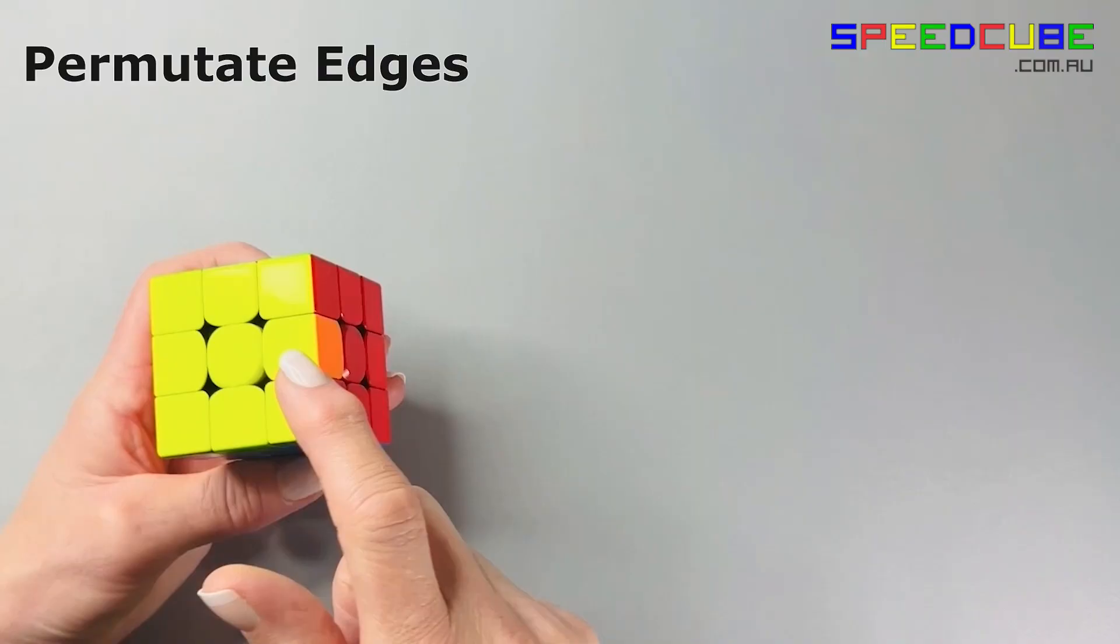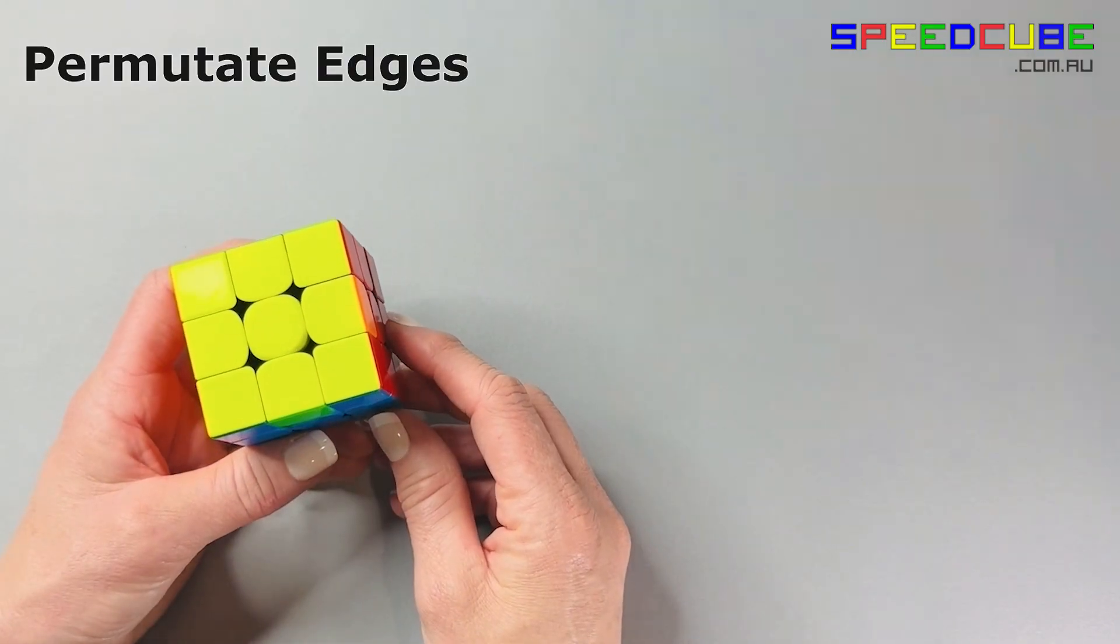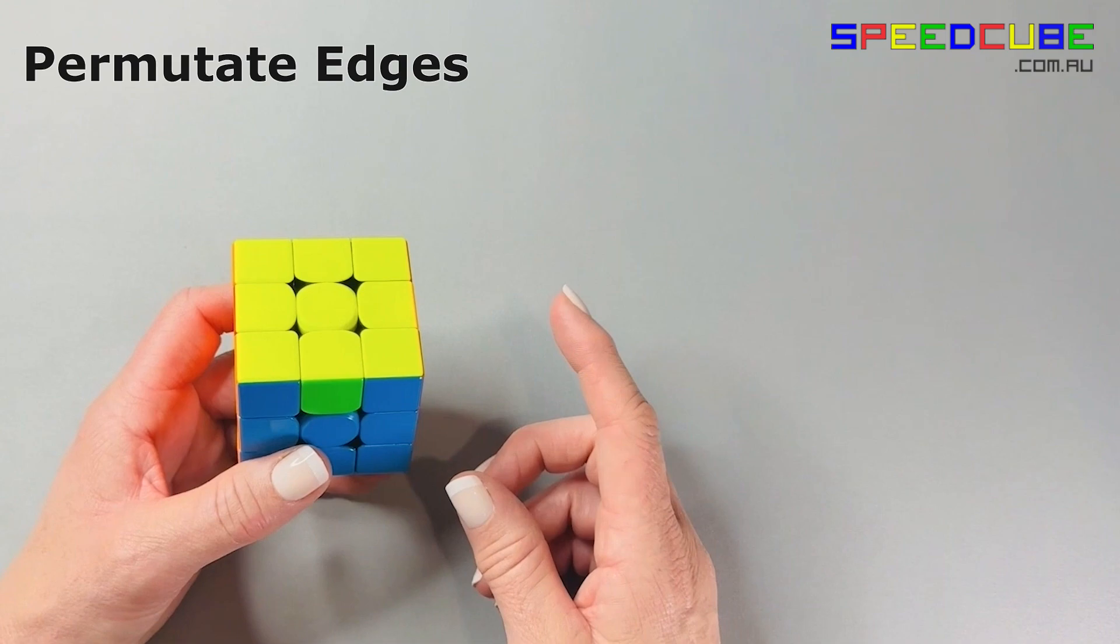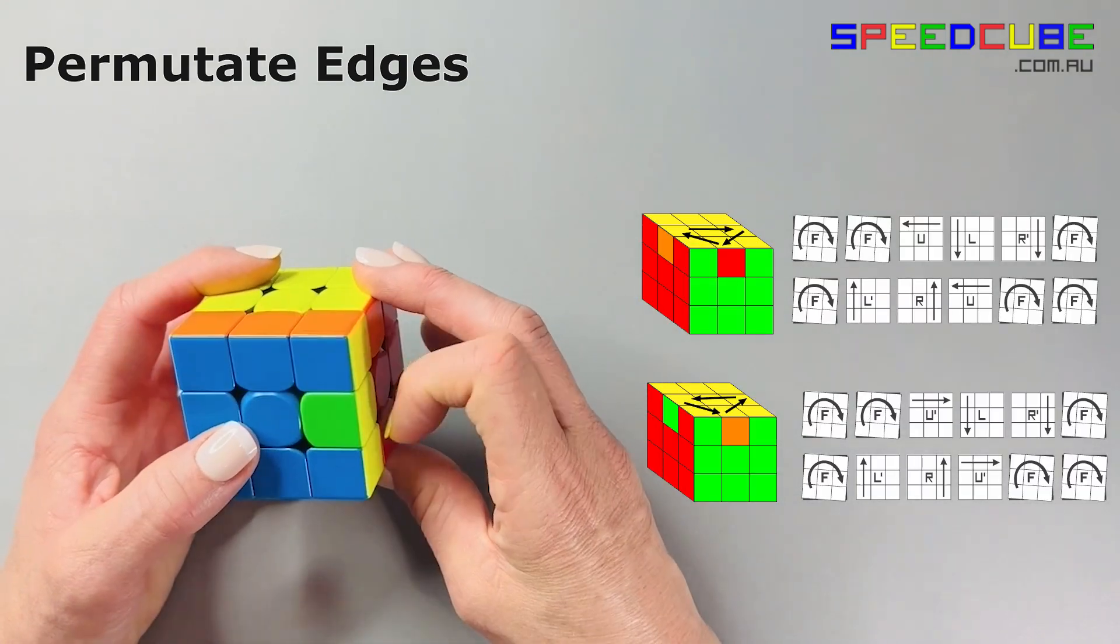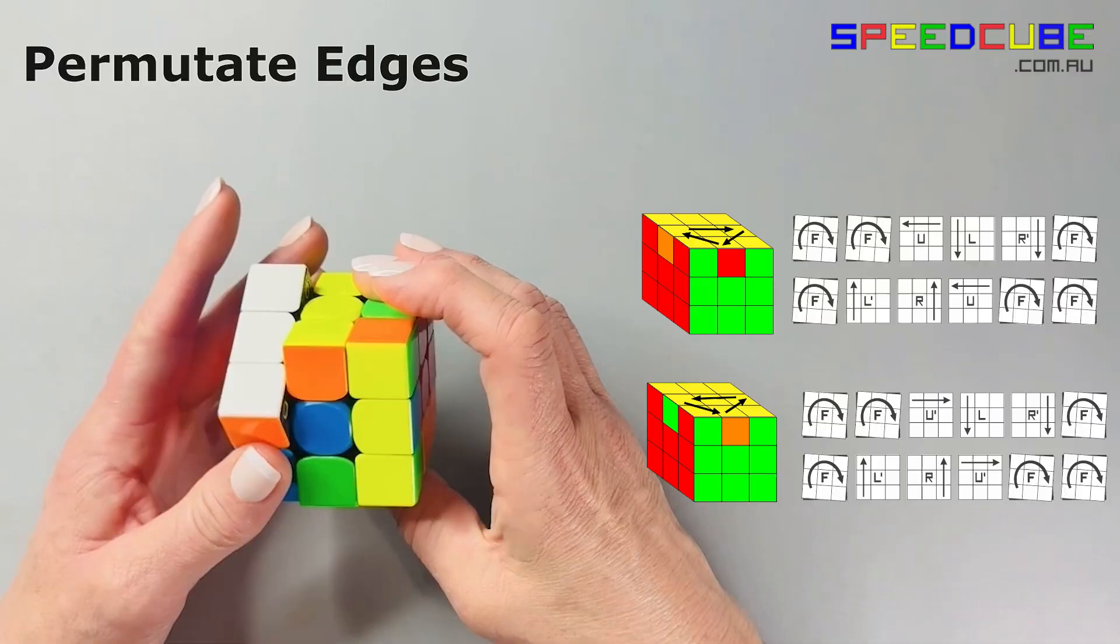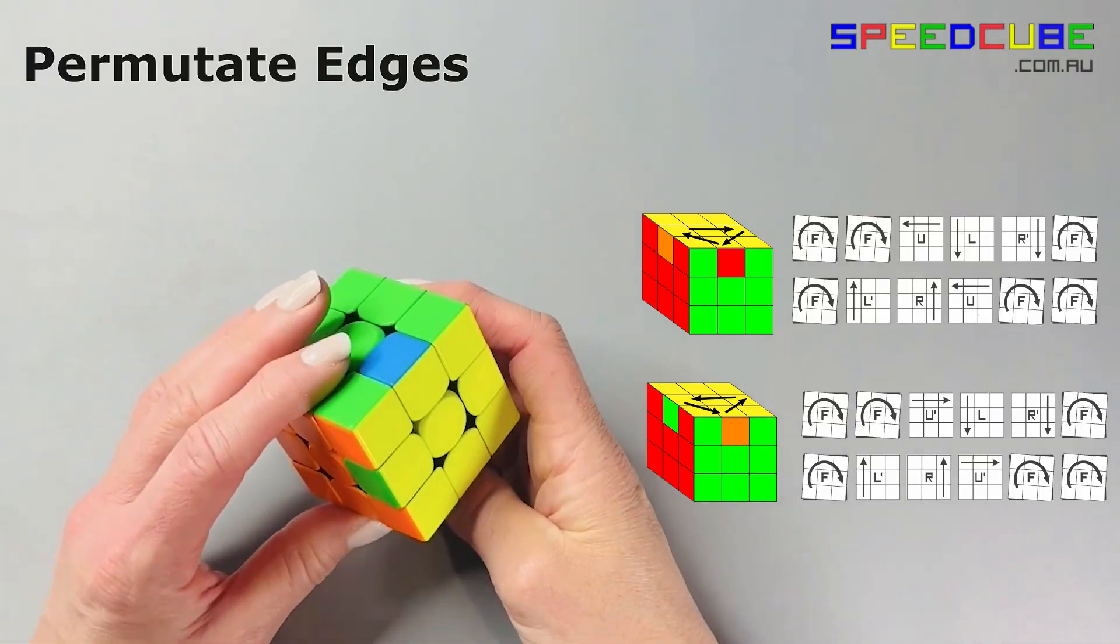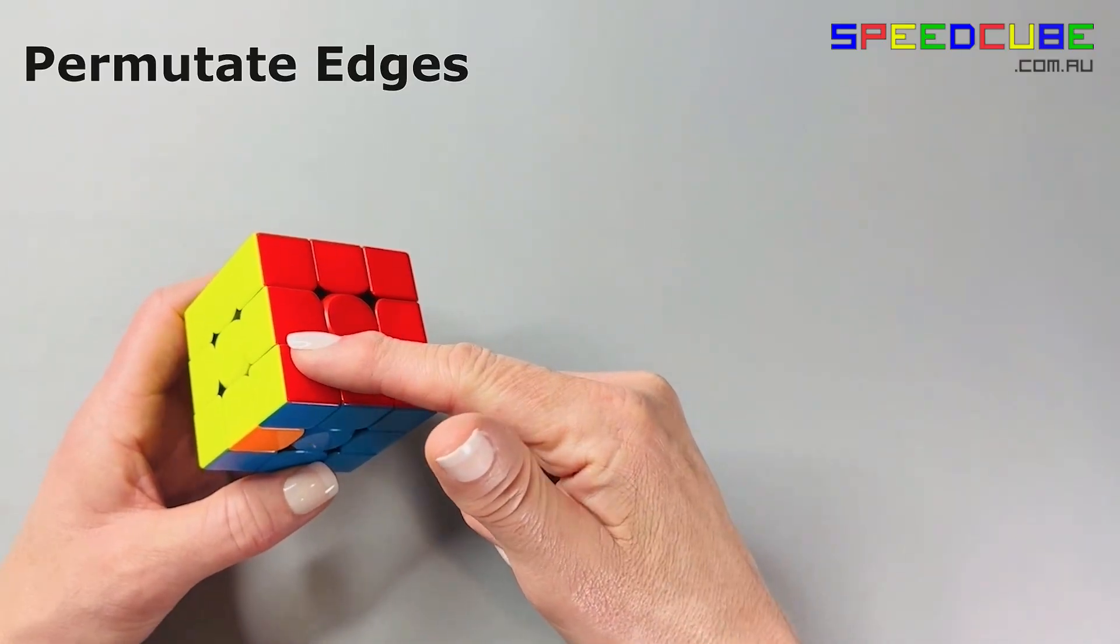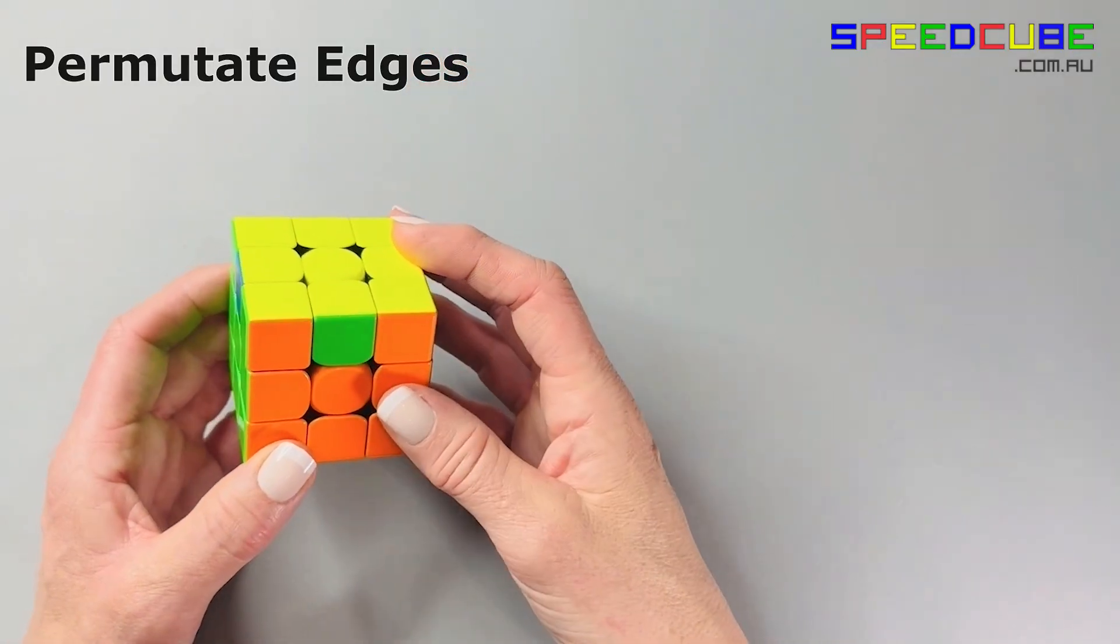If you have no solid bar, then hold your cube with any side facing you. Perform the steps once and then that will give you one solid bar. Like this. Hold your cube with that at the back and perform the steps again.